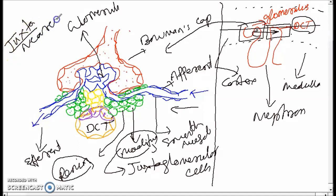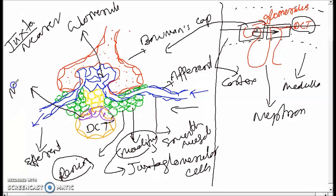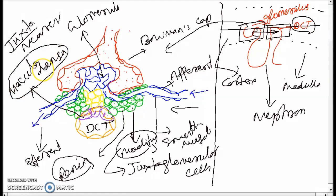They are present nearer to each other, for which we call them 'juxta' — juxta means nearer to. The DCT cells facing toward the juxtaglomerular cells are modified into dense patches, and these dense patches are called macula densa.